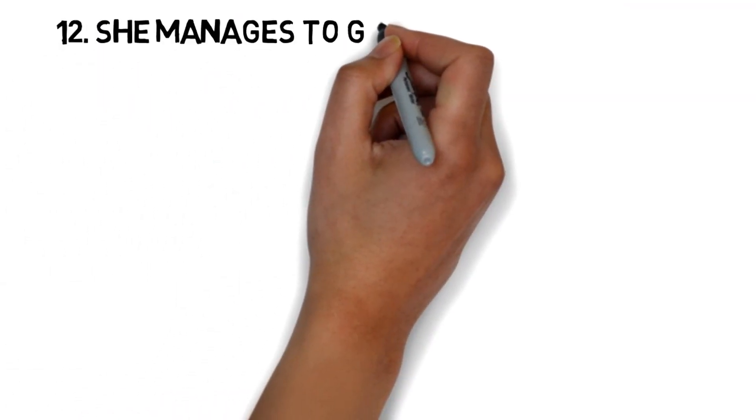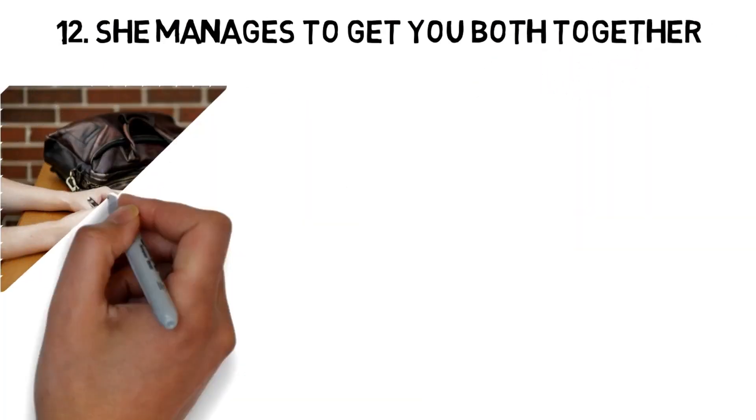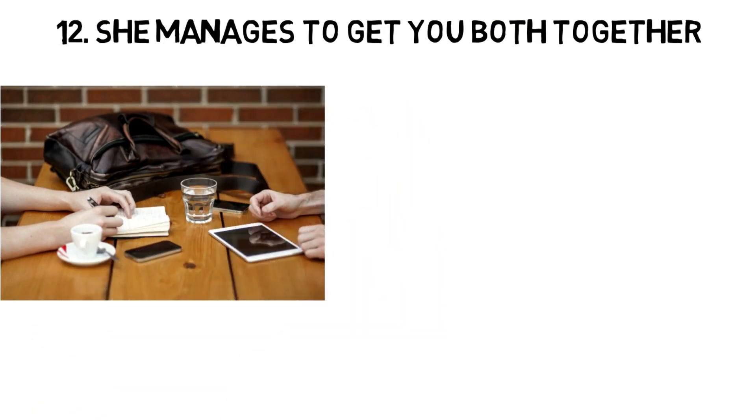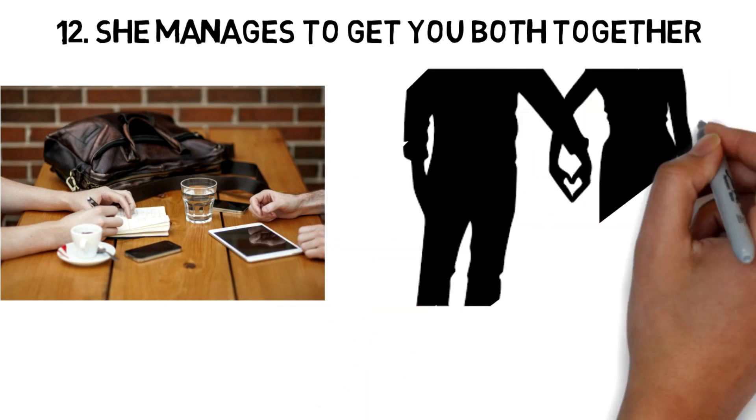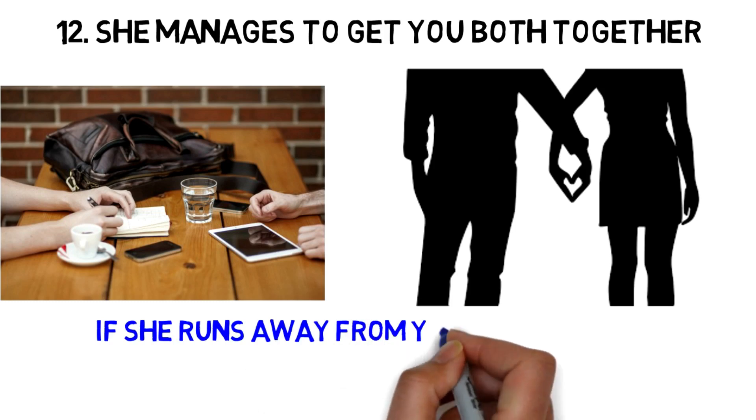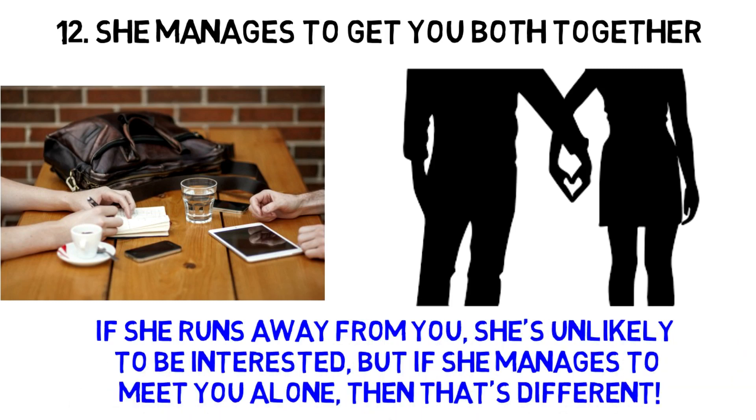12. She manages to get you both together. She takes her coffee break at the same time as yours at the office. She accompanies you when you leave your group of friends. She offers you to join her in one place or another. A woman in love always tries to establish a closeness with the man she likes. And for that, she needs isolation and proximity. So pay attention to the behavior of this girl you like so much. If she runs away from you, she's unlikely to be interested. But if she manages to meet you alone, then that's different.